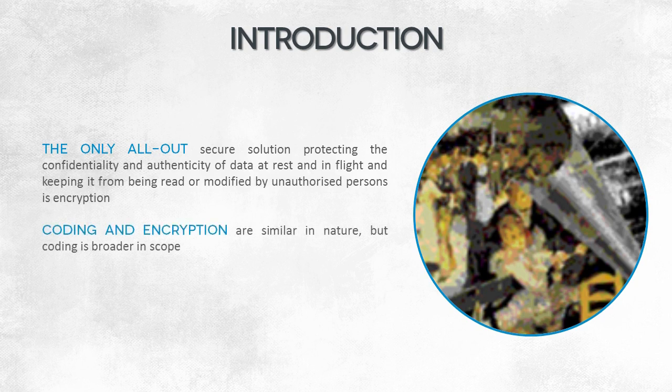Coding and encryption are similar in nature — they are comparable processes or operations. Coding is, however, more broad in scope. When you talk of coding, you refer to the process of translating programming expressions from one language into another. Computers are coding machines. Letters and digits you press on the keyboard are in fact transformed into bits by the machine. Computers interpret bit values — zero and one states.